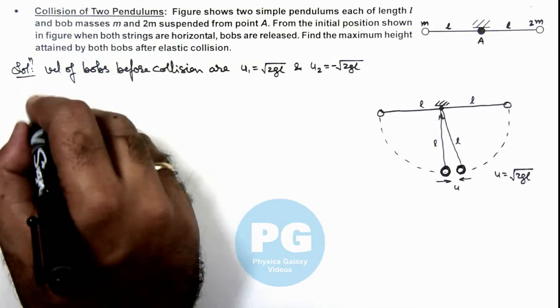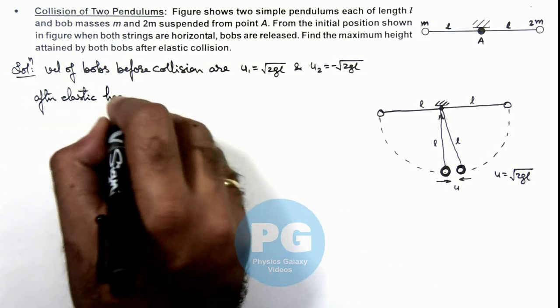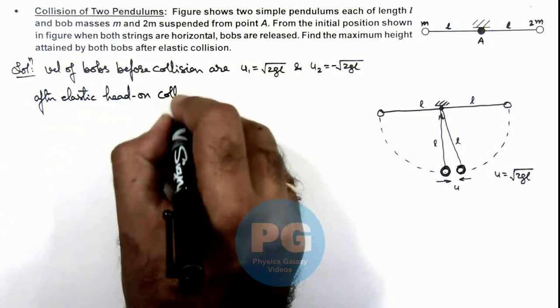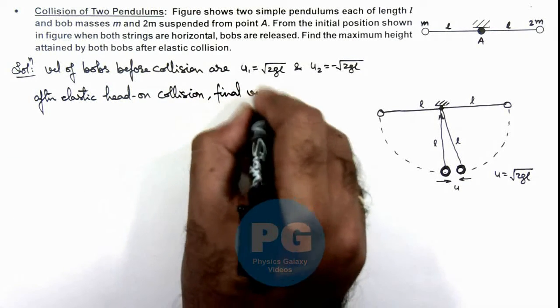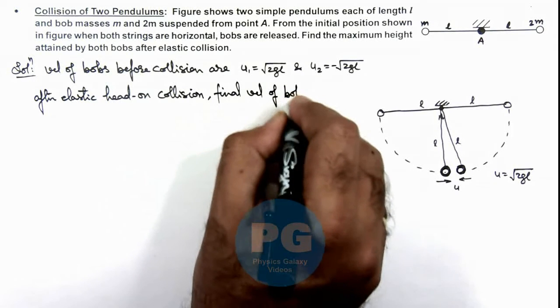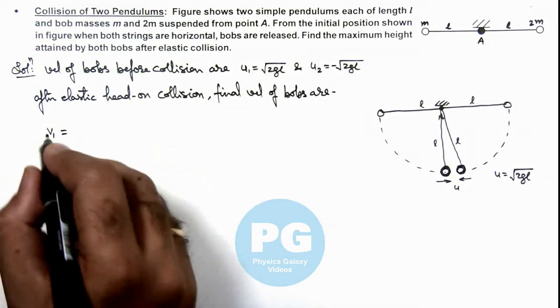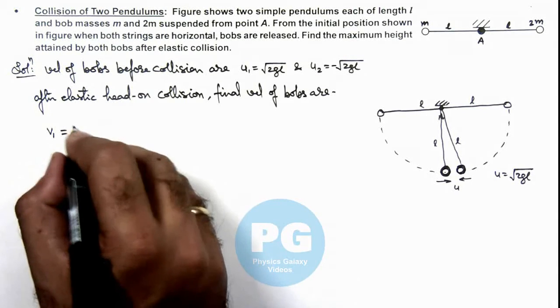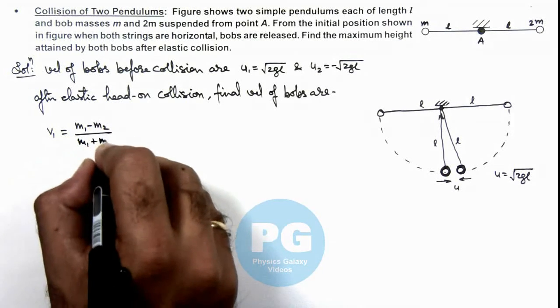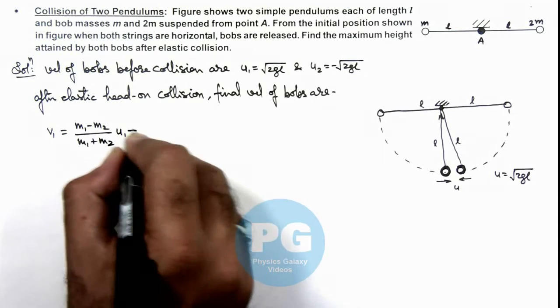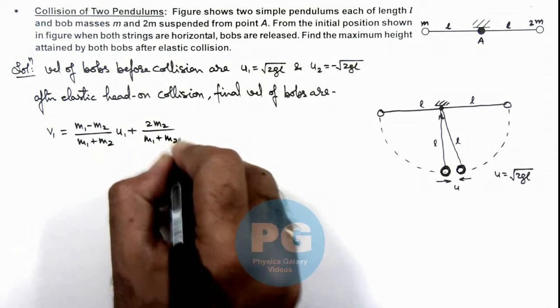After elastic head-on collision, final velocities of bobs are: we can directly use the results for v1 and v2 which we already studied in concept videos, which is m1 minus m2 upon m1 plus m2 multiplied by u1 plus 2m2 upon m1 plus m2 multiplied by u2.